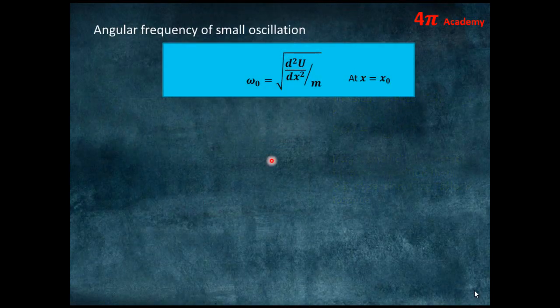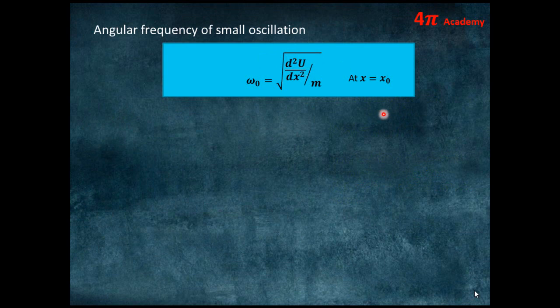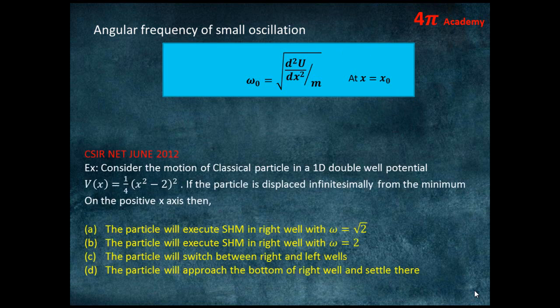The formula for the angular frequency of small oscillations is: ω₀ = √[(d²U/dx²)/m] evaluated at x = x₀. You can use this formula directly if the potential energy and displacement are given.